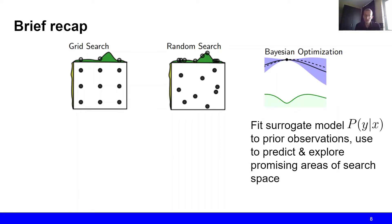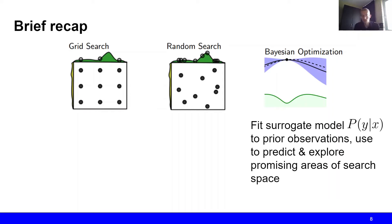We have seen that Bayesian optimization is one method to combat this limitation. In Bayesian optimization, what we do is we fit a surrogate model to our prior observations, which also allows us to predict promising regions of the hyperparameter space, such that we can focus or direct our search towards these more promising areas.